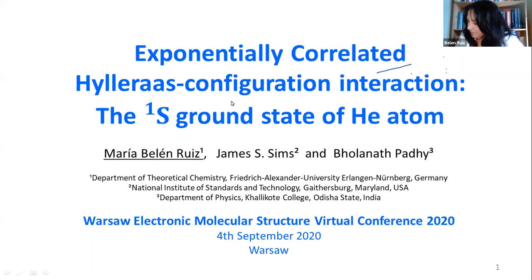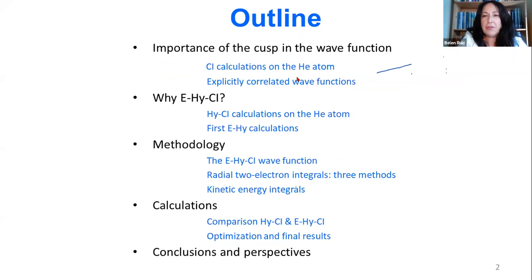I will now pass to the outline of this talk. First, I will talk about the importance of the CUSP in the wave function and show some CI calculations of the helium atom. Then I will make a review of explicit correlated wave functions. The second point will explain why the exponential Hylleraas CI wave function. Then we will pass to the methodology, where I will define the wave function and speak about the calculation of the integrals. Finally, I will show some calculations.